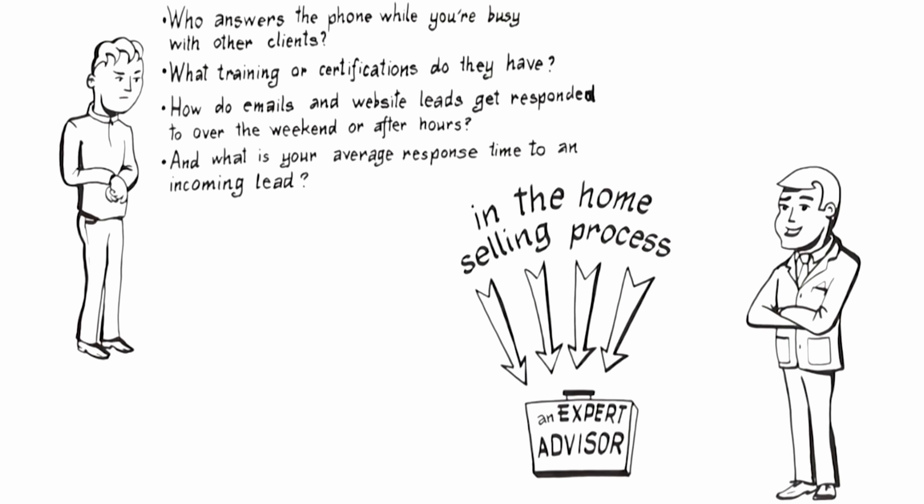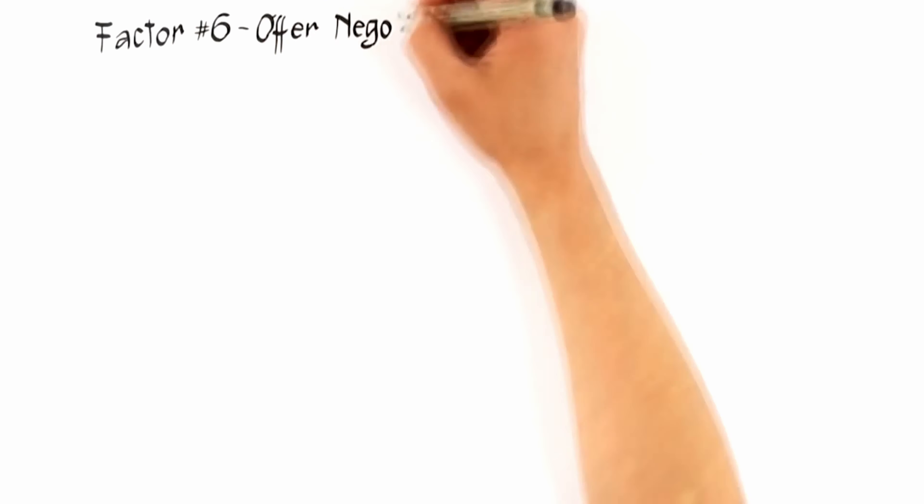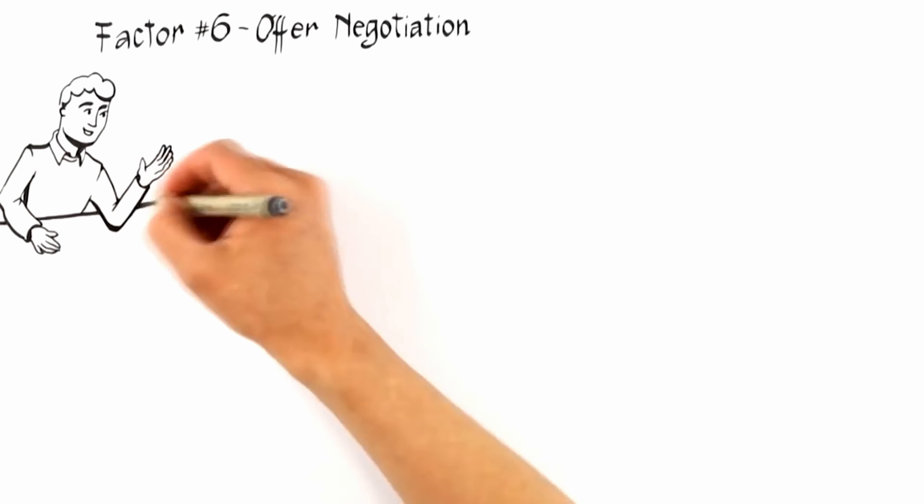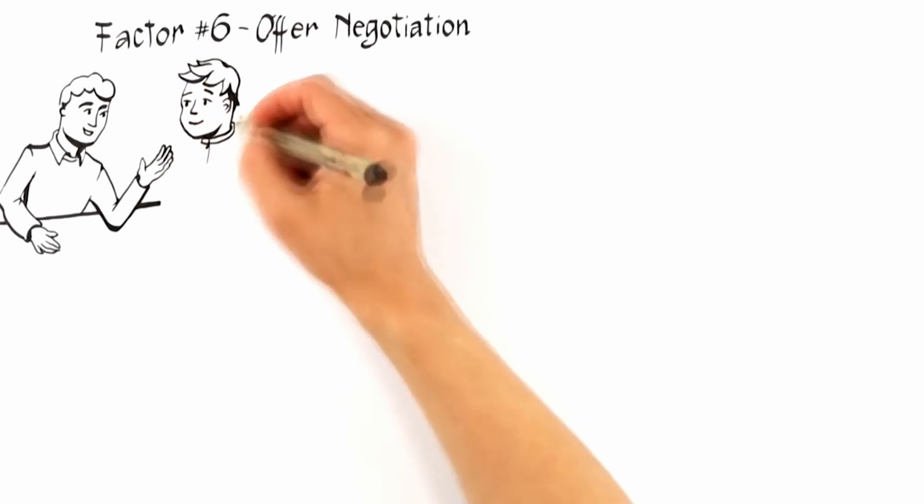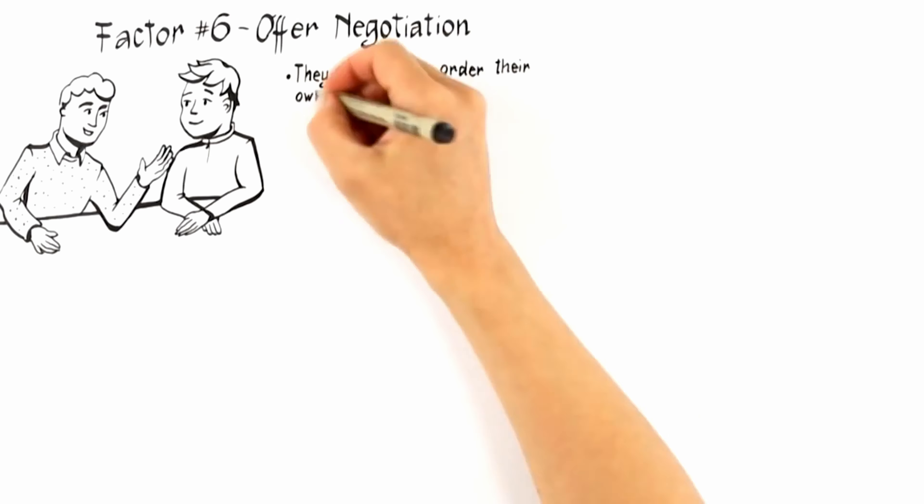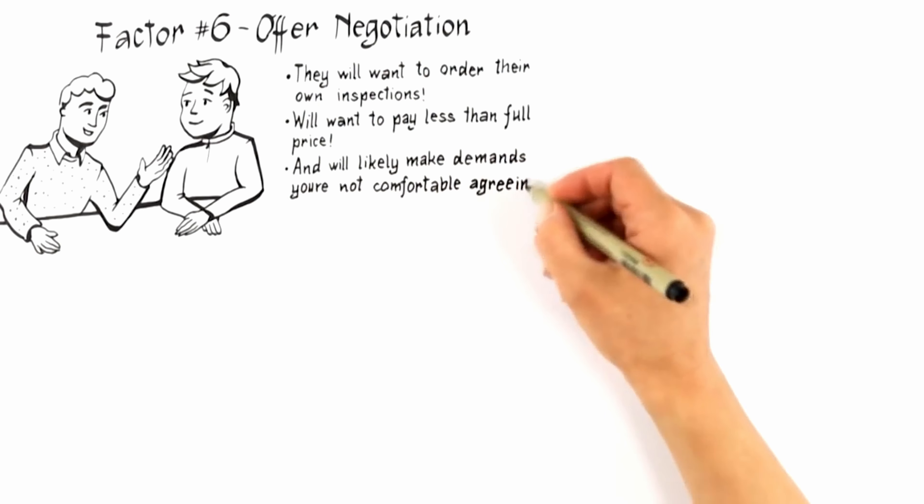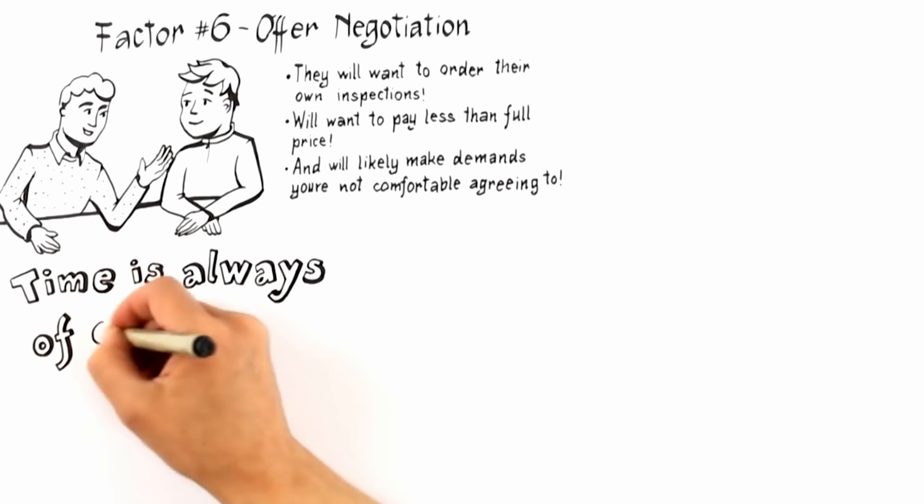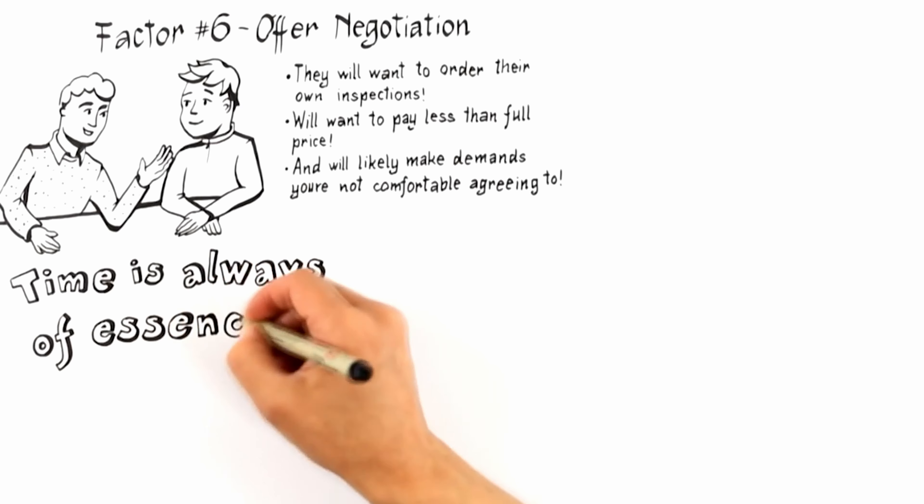Alright, the next to last factor that influences the likelihood you get top dollar for your home is factor number six: offer negotiation. Regardless of how well a home is positioned to attract the perfect buyer, they will want to order their own inspections, will want to pay less than full price, and will likely make demands you're not comfortable agreeing to. Therefore, not enough can be said about hiring an expert who can negotiate an outcome that serves your best interests.